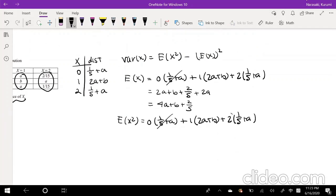Okay, so we take it to the second value. This is still 2a plus b because 1 squared is still 1. The change comes here though. So 2 squared is 4, so that's 4 over 5 plus 4a. So this is equal to 6a plus b plus 4 over 5.